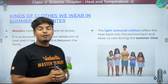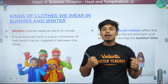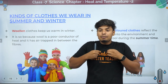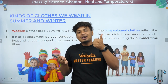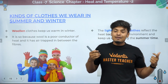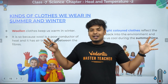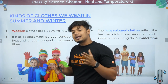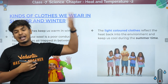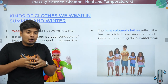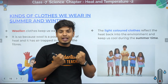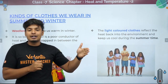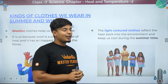Let's talk about the clothes we wear in summer and winter. Woolen clothes keep us warm because wool is a poor conductor of heat, and air is trapped between the woolen particles — air is also a poor conductor — so heat doesn't escape from the body. We wear light-colored clothes in summer because light colors reflect more light. We wear dark-colored clothes in winter because dark colors absorb more heat. Light colors reflect, dark colors absorb.